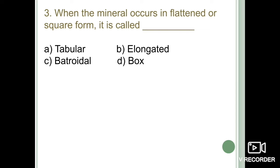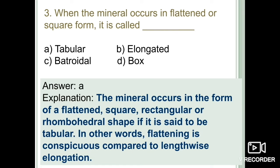The next question: when minerals occur in a flattened or elongated square form, they are known as — tabular, white riddle, elongated, or box? Minerals showing broad flat surfaces in their orientation are known as tabular structures. The best example is feldspar. Flattening is conspicuous compared to lengthwise elongation. The correct answer is option A: tabular form.